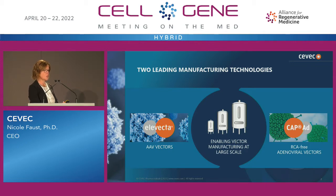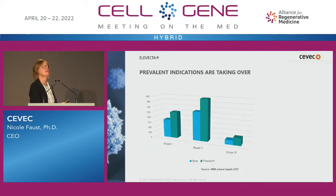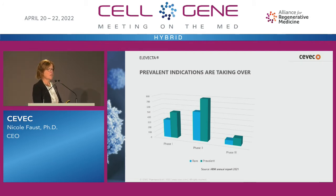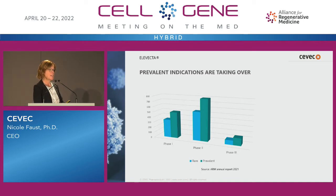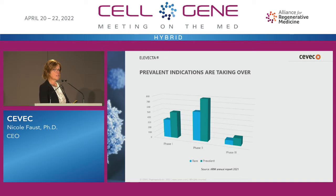Both platforms are highly suitable for vector manufacturing at a large scale. When we think of cell and gene therapy and ATMPs, we usually think about rare diseases. But if we really look at the numbers — taken from the annual ARM report — the prevalent diseases are really taking over in terms of clinical trial counts.